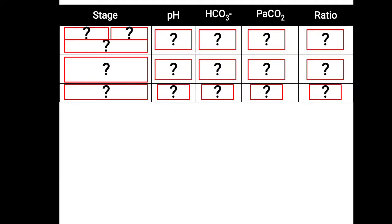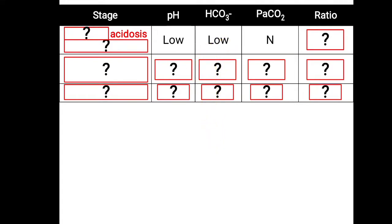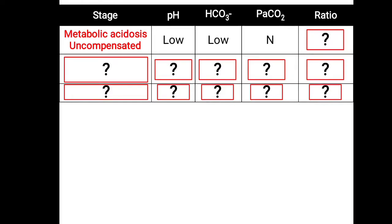To determine if metabolic acidosis is uncompensated, partially, or fully compensated: pH is low, confirming acidosis. If HCO3 is decreased but PaCO2 is normal, the compensatory mechanism has not yet started. This is uncompensated metabolic acidosis — only the primary change (decreased bicarbonate) is present with PaCO2 remaining normal.